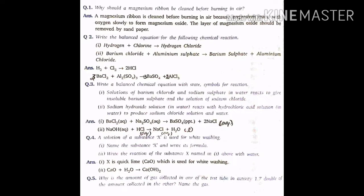Question number 1. Why should a magnesium ribbon be cleaned before burning in air? A magnesium ribbon is cleaned before burning in air because magnesium reacts with oxygen slowly to form magnesium oxide. The layer of magnesium oxide should be removed by sandpaper.